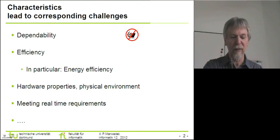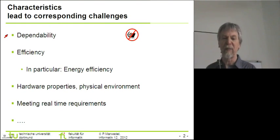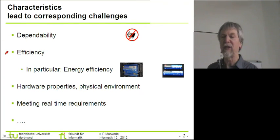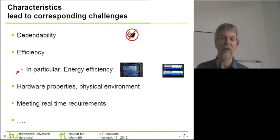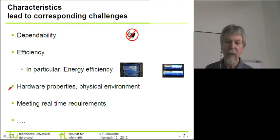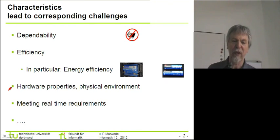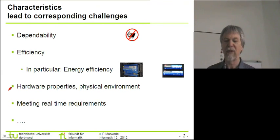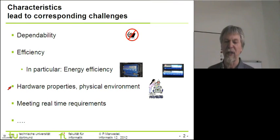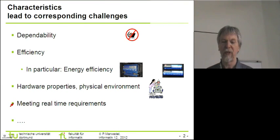We have to make sure that our systems are dependable as required by the applications. Furthermore, these systems need to be efficient, and this efficiency has a number of different aspects — for example, we have to look at energy efficiency. One of the characteristics was the fact that we are using the embedded system, the information processing part, in the so-called hardware-in-a-loop, where the IT components were interfaced with the physical environment. Also, we have the need to meet real-time constraints.